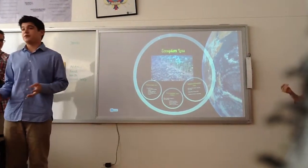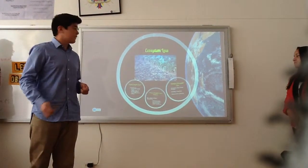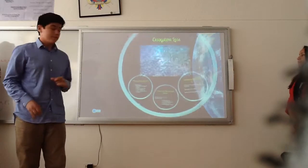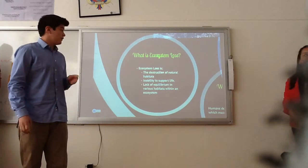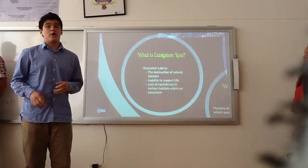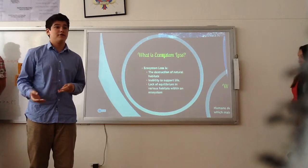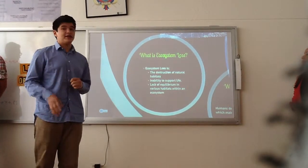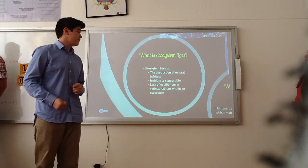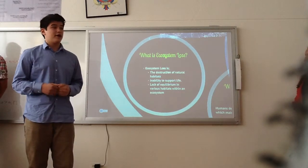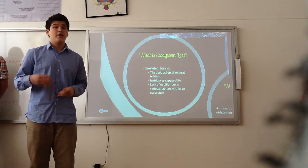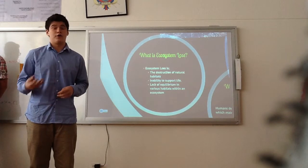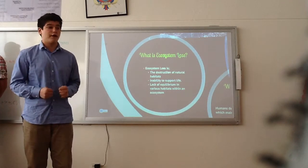Now we're going to ecosystem loss. The ecosystem is the interaction between living organisms and the environment that they live in. Ecosystem loss is extremely detrimental to human life. The destruction of natural habitats through ecosystem loss not only kills off many animal species, but also plant species, which are crucial for human life as we live it. We have to drastically change the way we live if all these species were to become extinct in the near future. This inability to support life creates a lack of equilibrium that will deteriorate the quality of soil in forests and the ability of plants to provide their healing or nutritional value to humans.